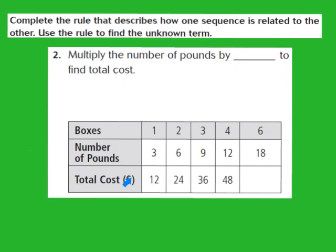The second set of numbers going across represents the total cost. So for 3 pounds, it would cost a total of $12. For 6 pounds, it would cost a total of $24. For 9 pounds, it would cost a total of $36. And for 12 pounds, it would cost a total of $48. Our job is to figure out, based on the rule we come up with, for 18 pounds, what would the total cost turn out to be?